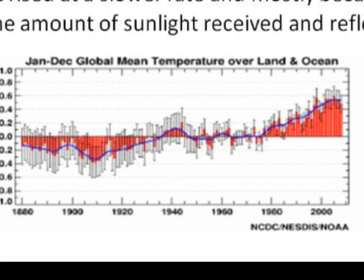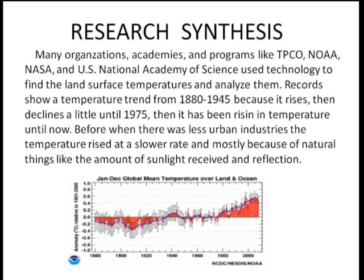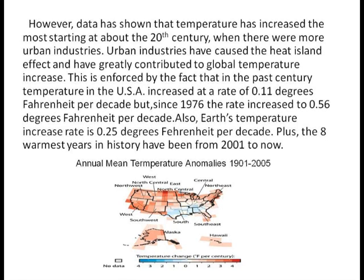Records show a temperature trend from 1880 to 1945 that started to rise, then declined a little until 1975, then it rose in temperature until now. Before, when there was less urban industry, the temperature rise was at a slower rate and mostly because of natural things like the amount of sunlight received and reflection. However, the data has shown that the temperature has increased starting mostly in the 20th century, when there were more urban industries.